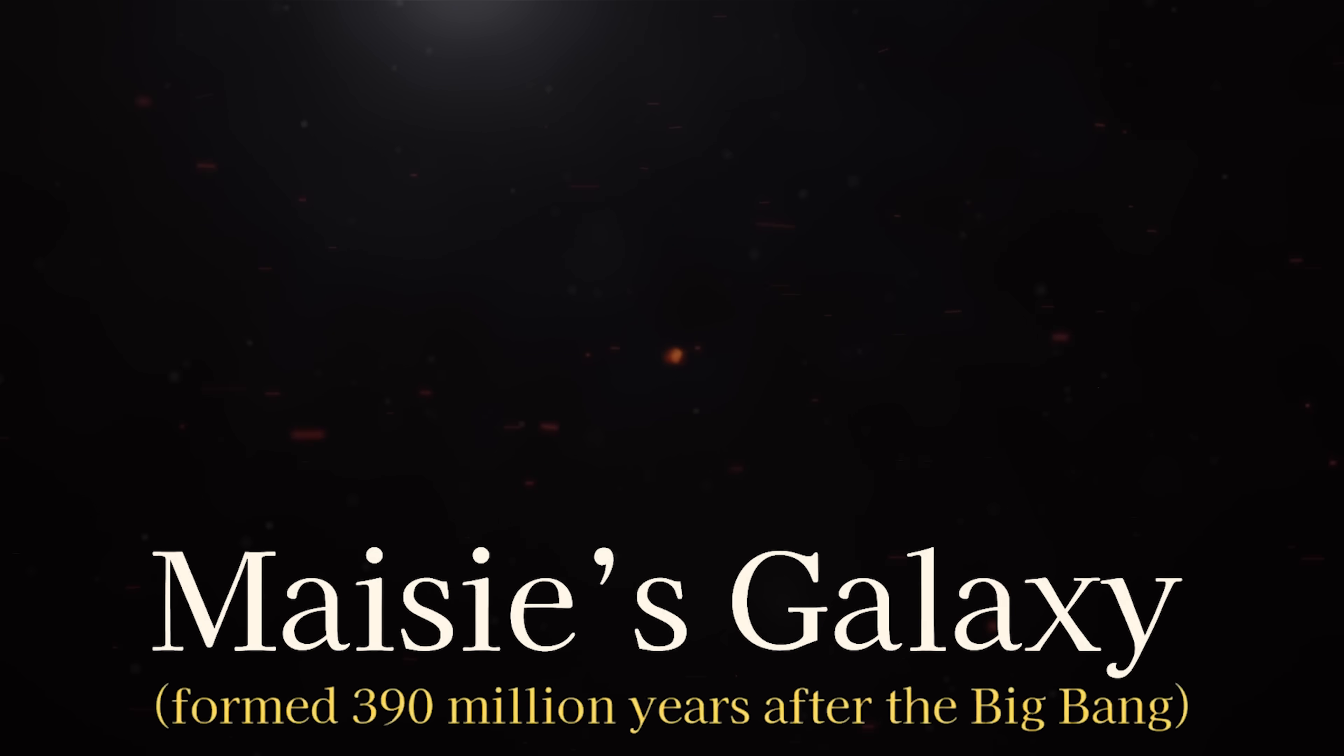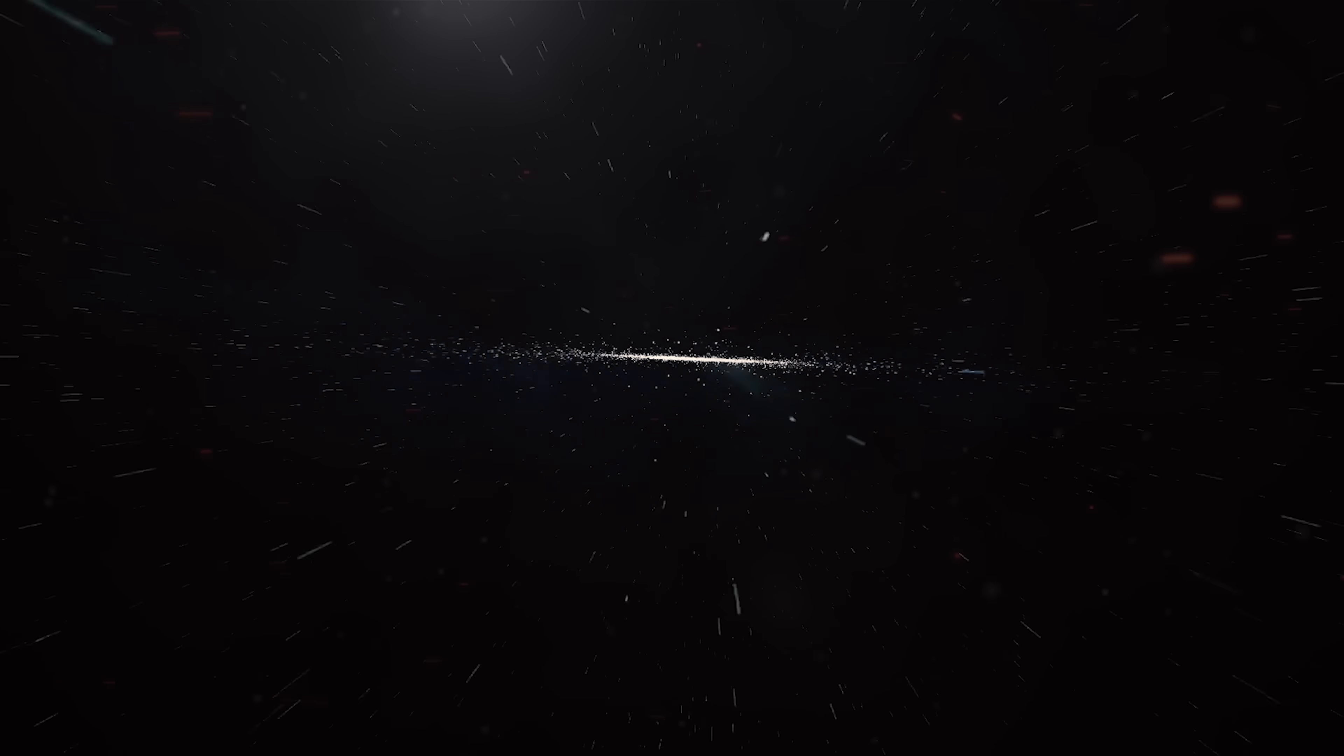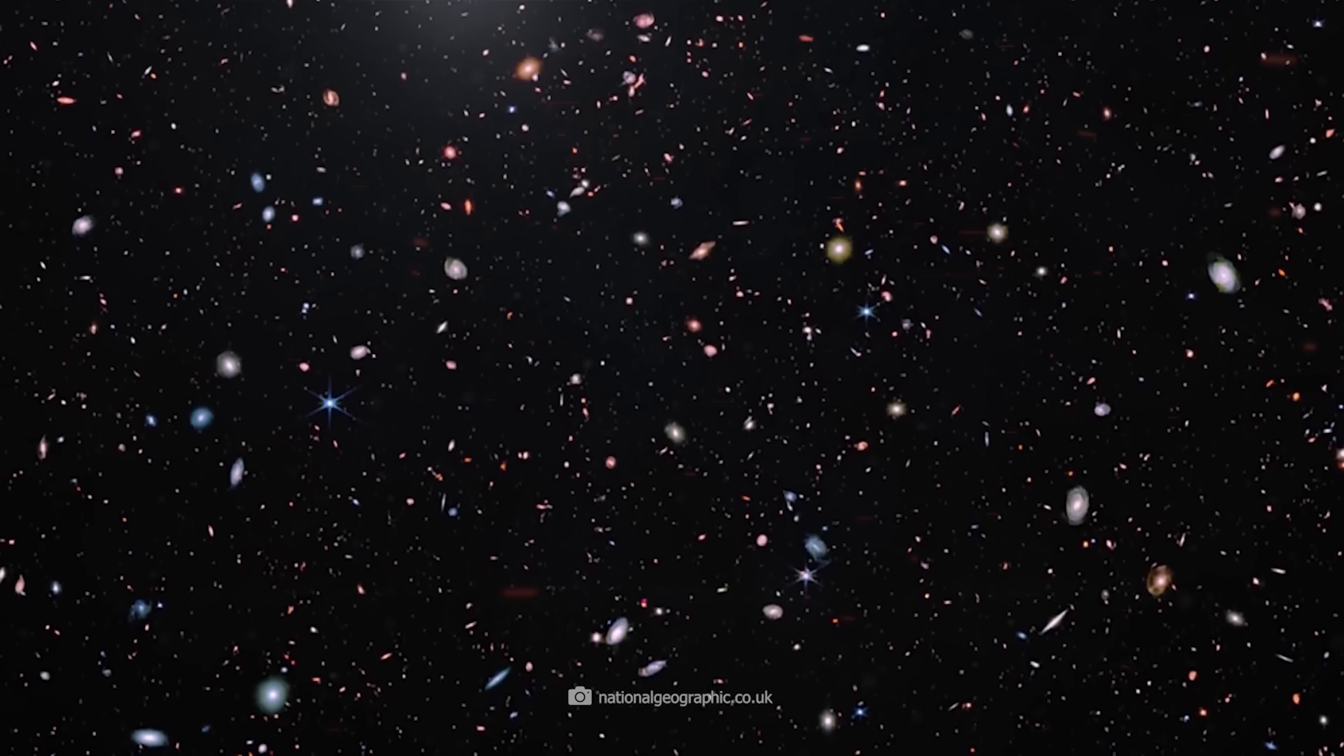The oldest galaxy we have found using the telescope so far is Macy's Galaxy, which existed when the 13.8 billion year old universe was just around 390 million years old, which is incredibly young for our cosmic expanse. Not to mention that Macy's Galaxy is one of the many candidates that Webb has spotted, and more research and observation can reveal galaxies that existed even earlier than that.